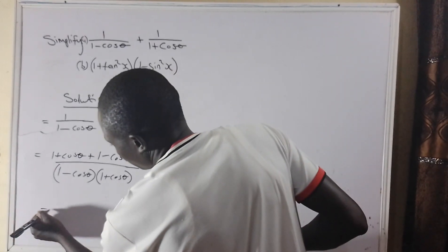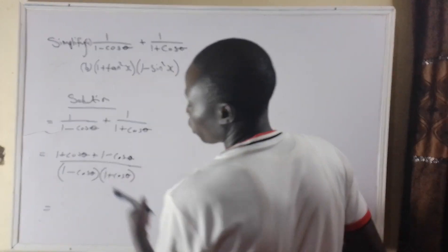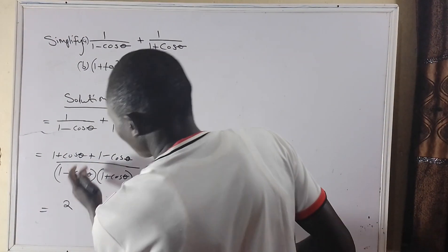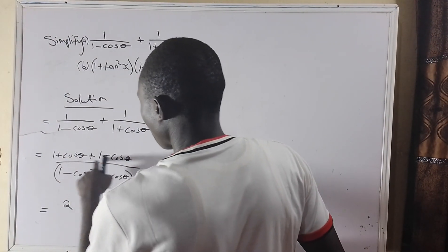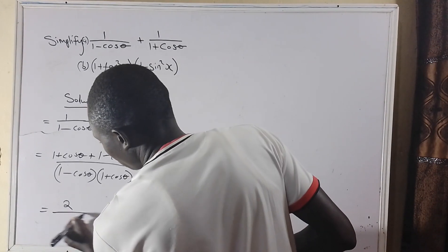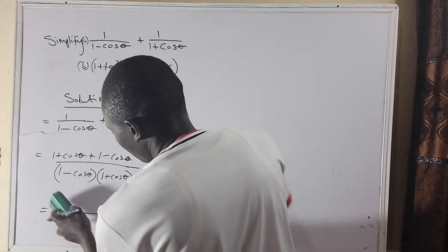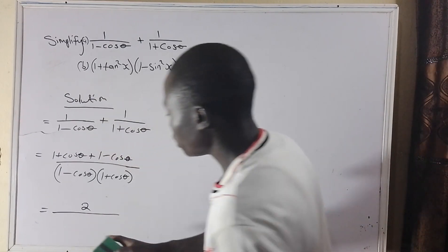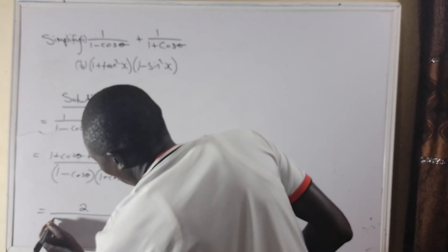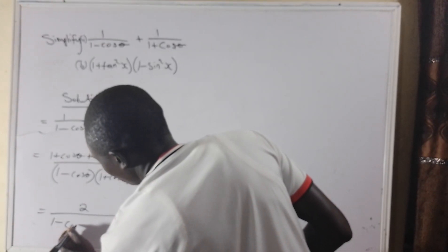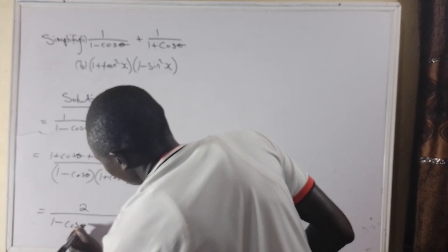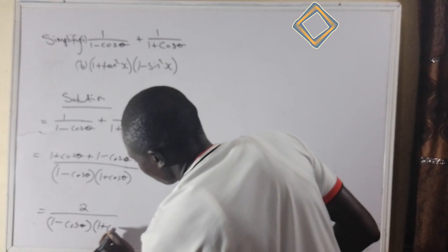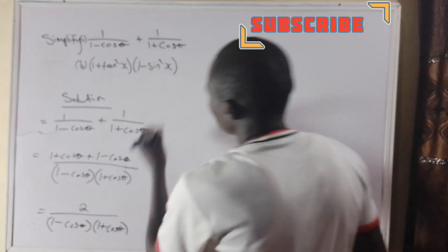This is equal to 1 plus 1, because I have to collect like terms — 1 plus 1 is 2. Then cos theta minus cos theta is 0. So we have 2 over the product of 1 minus cos theta and 1 plus cos theta.